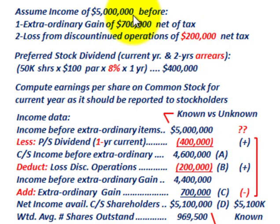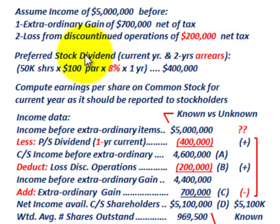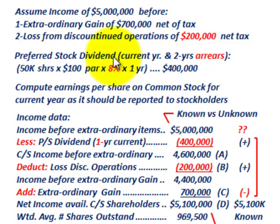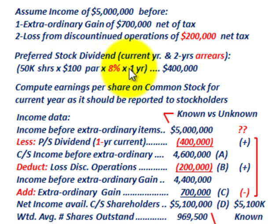We're also going to have a preferred stock dividend for the current year, and we have two years in arrears that haven't been paid. The preferred stock is 50,000 shares at $100 par with an 8% dividend per year.